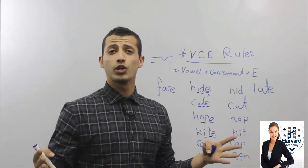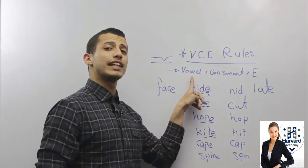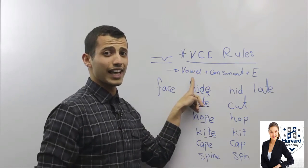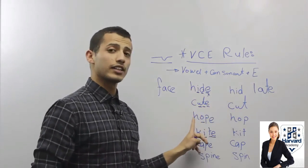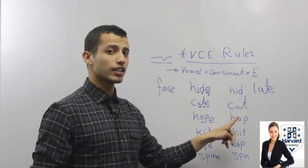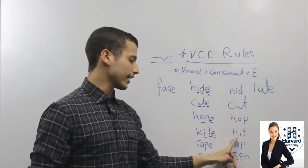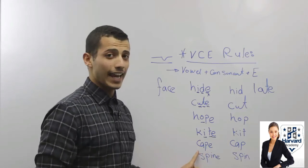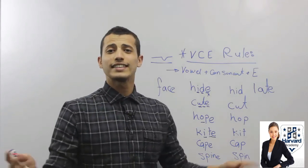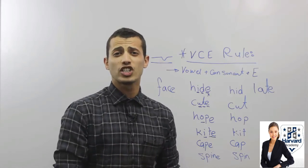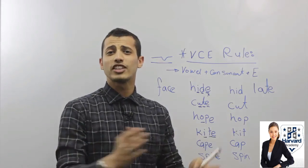Let's recap quickly. The VCE rule: whenever you see a word that ends with vowel then consonant then E, you're going to pronounce the vowel as a letter in the alphabet. Hide, hid. Cute, cut. Hope, hop. Kite, kit. Cape, cap. Spine, spin. That's it for today, guys. If you have any questions, let us know in the comment section.